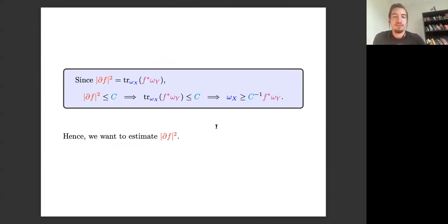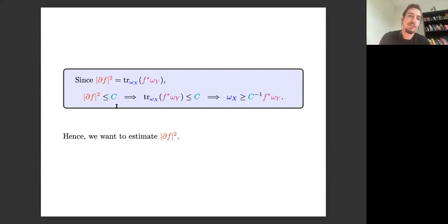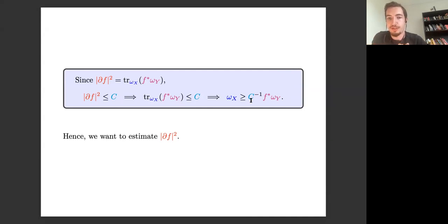If we take a holomorphic map f from X to Y — both compact Kähler manifolds — and take ω_X a metric on X and ω_Y a metric on Y, then the norm squared of the derivative is exactly the trace with respect to the source metric of the pullback of the target metric. So an estimate on the norm squared of the derivative of a holomorphic map gives an estimate on this trace, which in turn gives the desired lower bound estimate. The aim is to get estimates on the norm squared of the derivative of a holomorphic map.